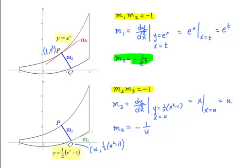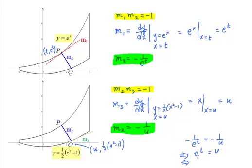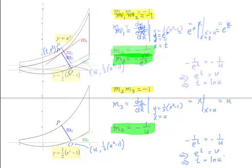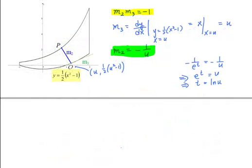Now we have found two ways of expressing m2. Equating them, we find negative 1 over e^t equals negative 1 over u. Therefore we have the relation e^t equals u, or in other words, t equals ln u. The equation of the normal line at Q passes through point Q and has gradient negative 1 over u.